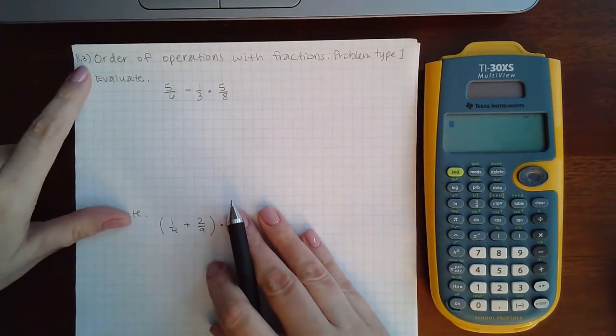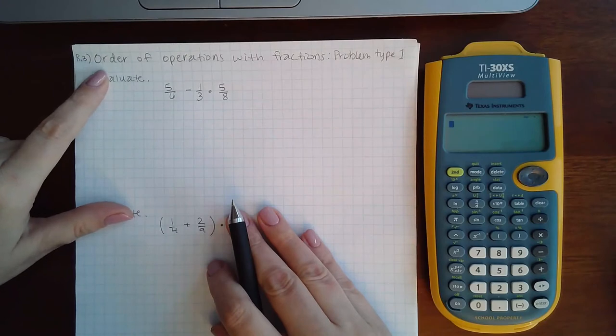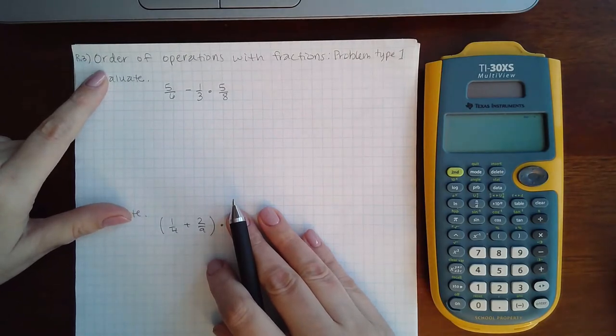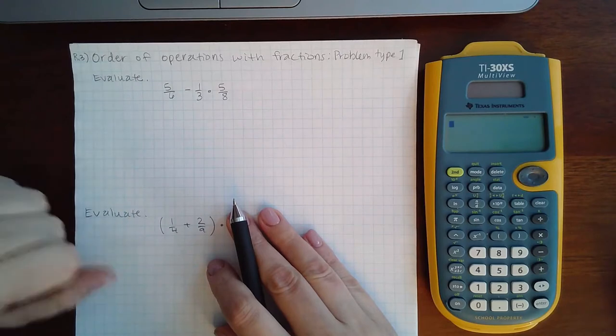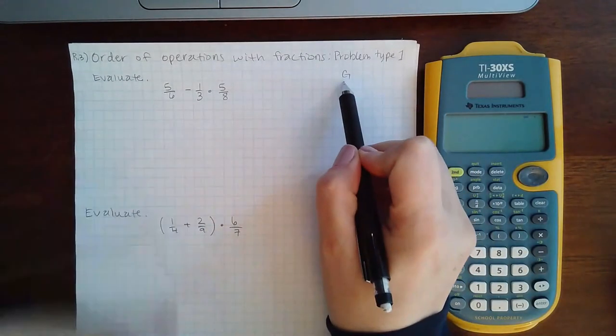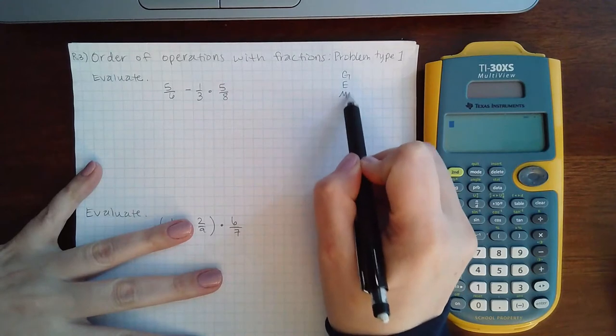This is Chapter R, Section 3, Order of Operations with Fractions, Problem Type 1. So it has us evaluate this kind of expression. If I go through the order of operations, there's only four steps.